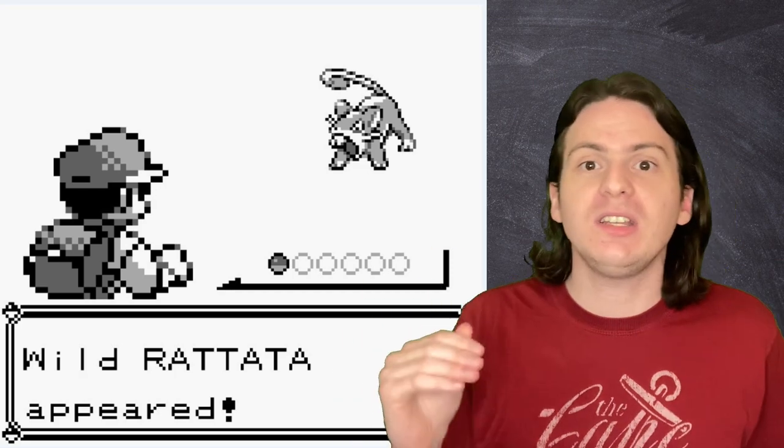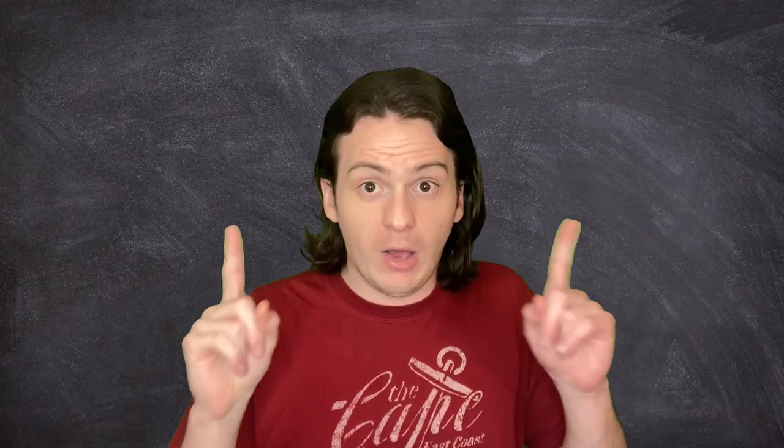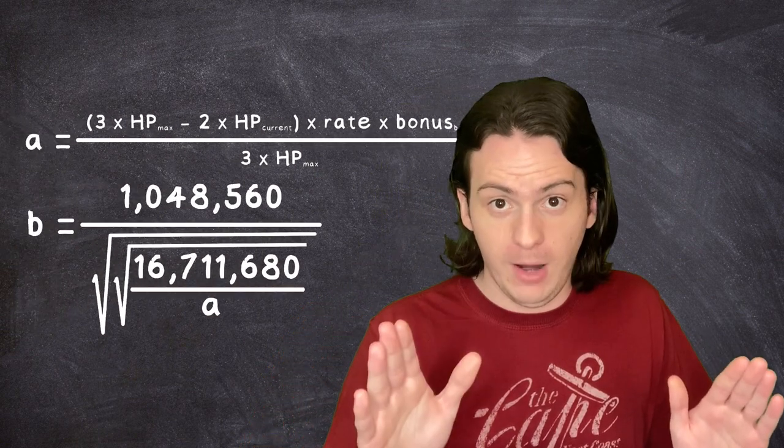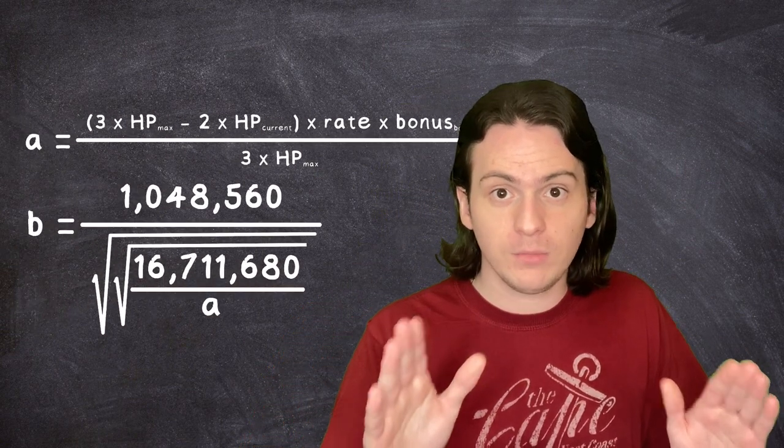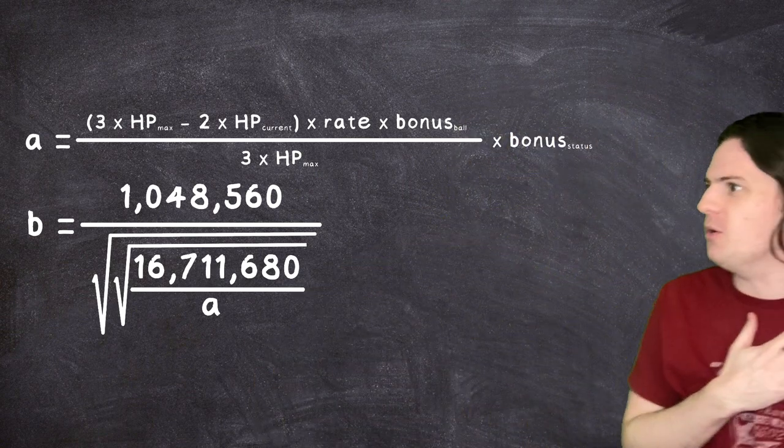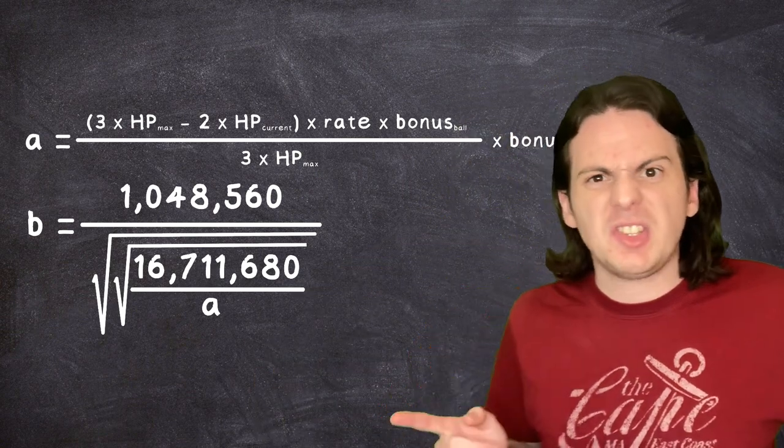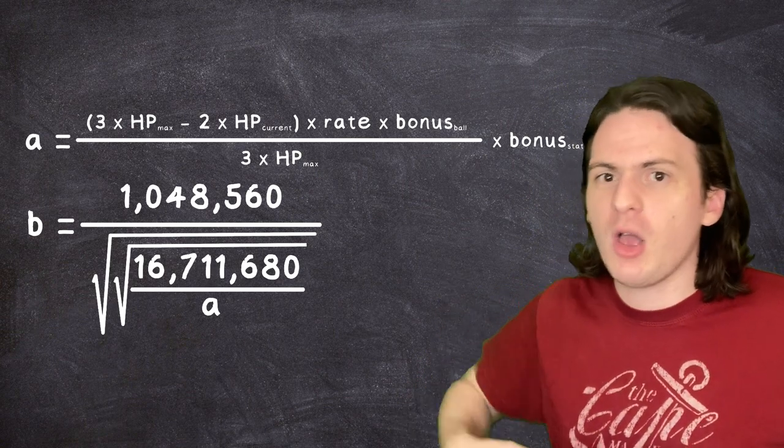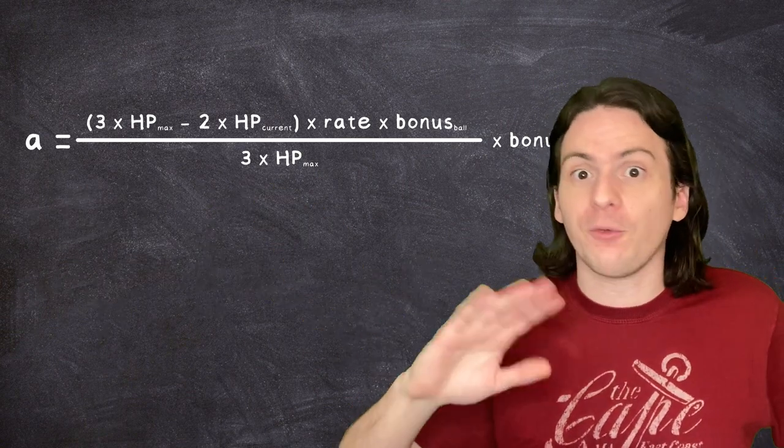If we want to understand how exactly the game determines if you're going to catch that Rattata you found, all we need to do is break down the formula behind it. Now I want you all to brace yourselves. It looks pretty scary, but remember it's just a mathematical equation. It cannot hurt you. All right, I'm going to put it on the screen now. Ready? There. Y'all hanging in there? You're all still good? Awesome. See, that wasn't too bad. Oh my God, there's two. All right, let's break this thing down. This second equation here, it won't be important until later. So we're just going to throw it off to the side. Not a factor. Forget about it.